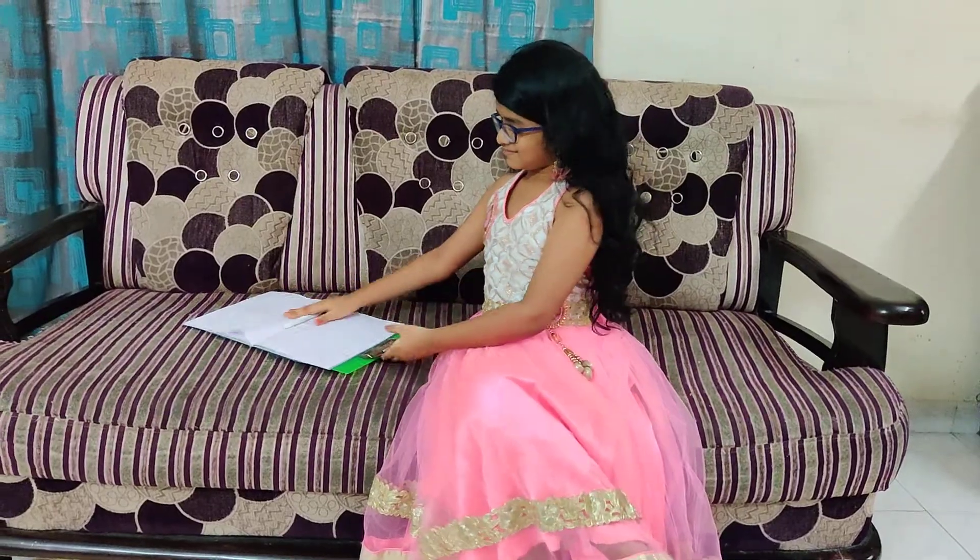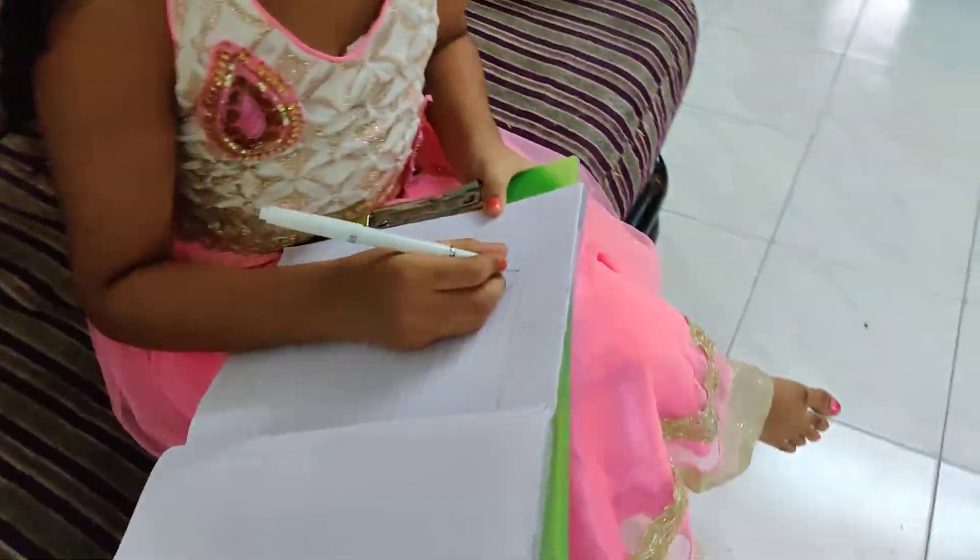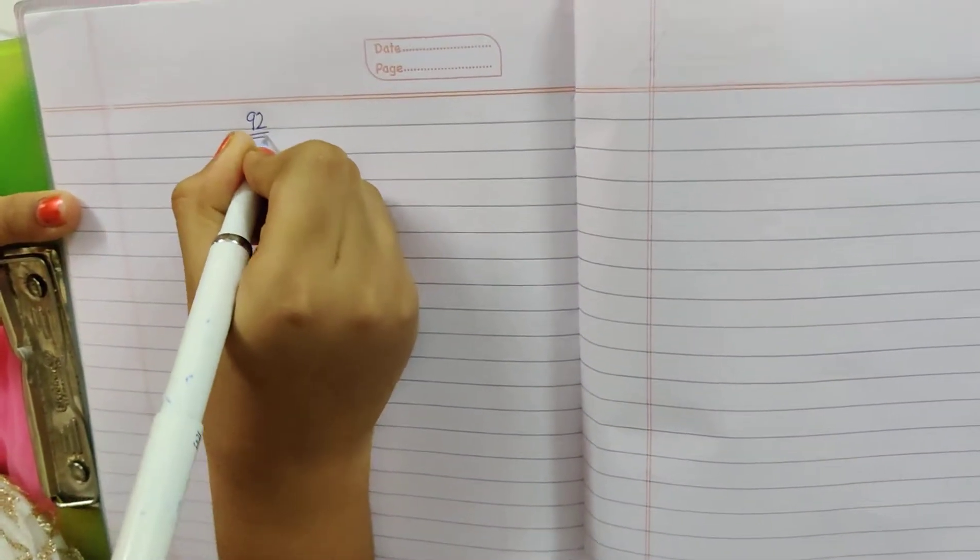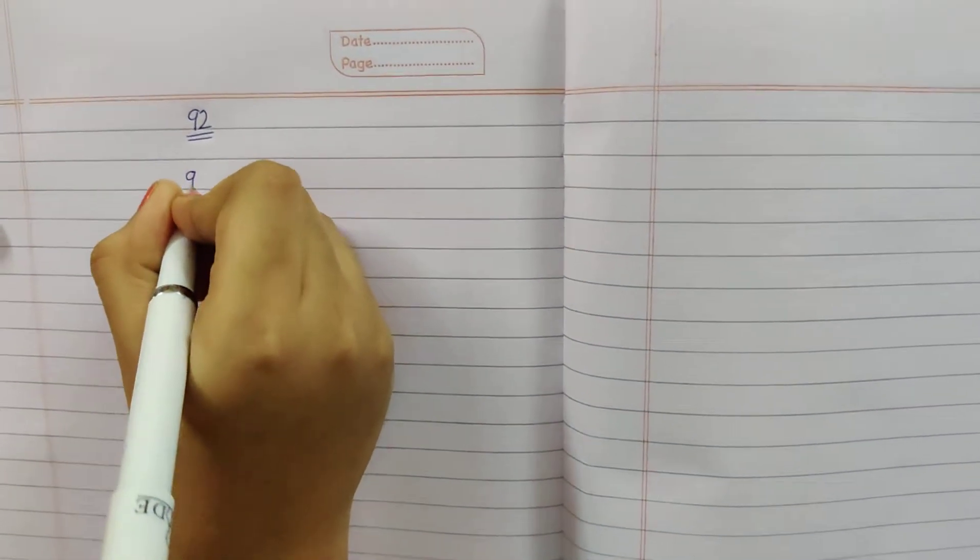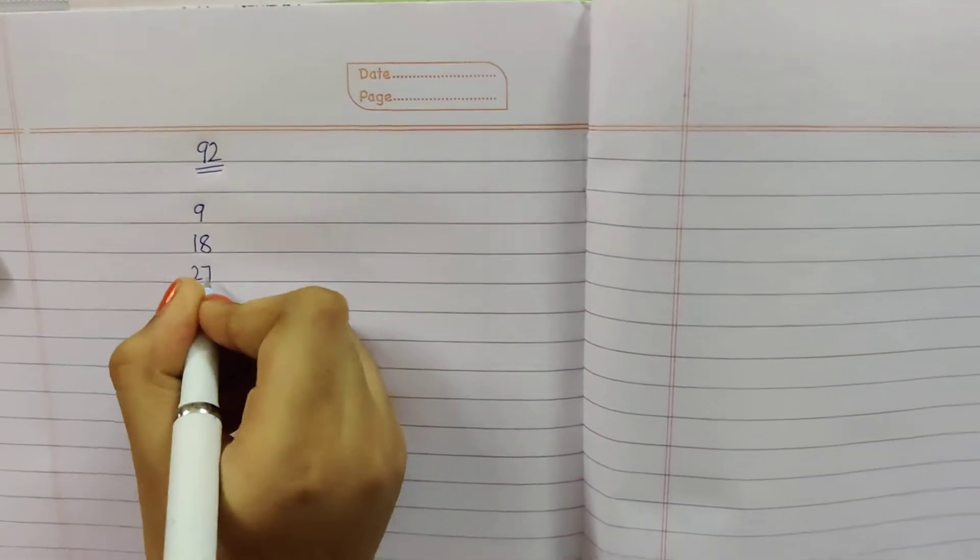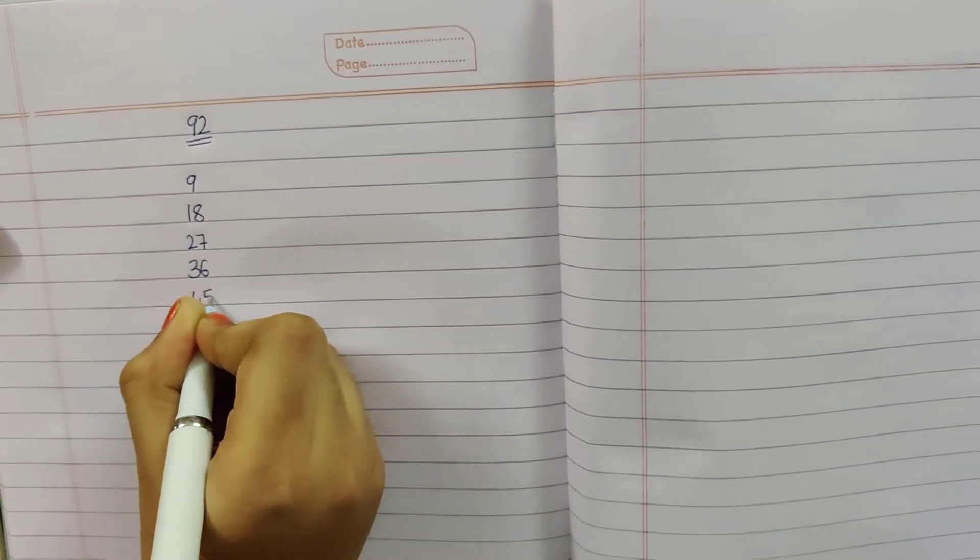I am taking the example 92. First write the multiples of 9. 9, 18, 27, 36, 45,